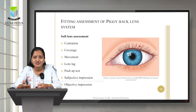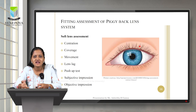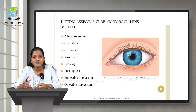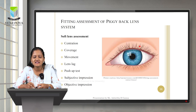Subjective impression is the patient's report of comfort with the contact lens, graded from 0 to 10 — where 0 indicates extreme discomfort and 10 indicates maximum comfort. Objective impression is the examiner's conclusion on whether the fit is flat or optimal. These are the basic criteria assessed during soft contact lens evaluation.